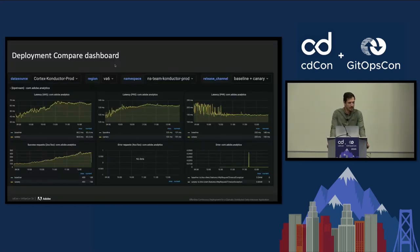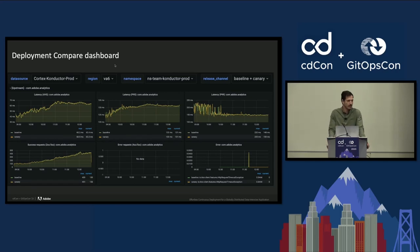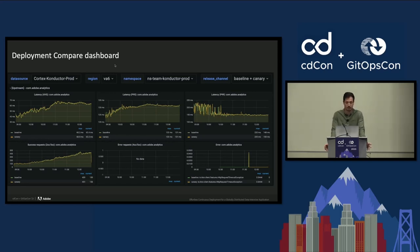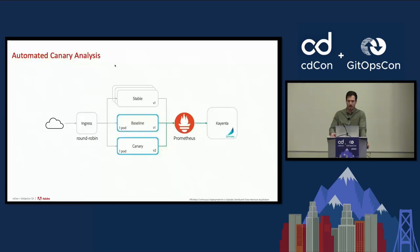Our validation dashboard is called deployment compare, and here we track 165 metrics. Each graph shows a metric from the baseline and the canary, and the release engineer's job is to spot any pattern difference between the two lines. This is a tedious process, as we need to check seven regions — which is why we were running canaries in only two of them.